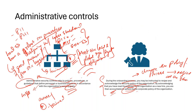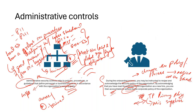I stumbled upon this with one of my clients where there was a major change in their third-party privacy policy, but they didn't notify the suppliers. So if there is a policy change, please make sure you are communicating it to all relevant stakeholders — be it internal, external, or anyone who is actually working with it — so they are aware of the change. That's pretty much a summary of administrative controls.